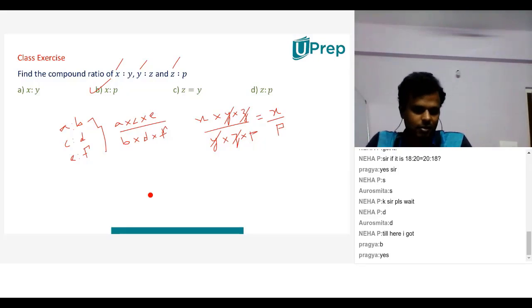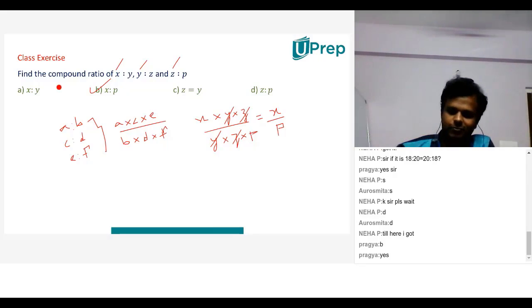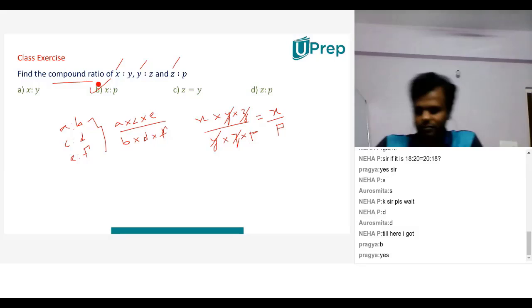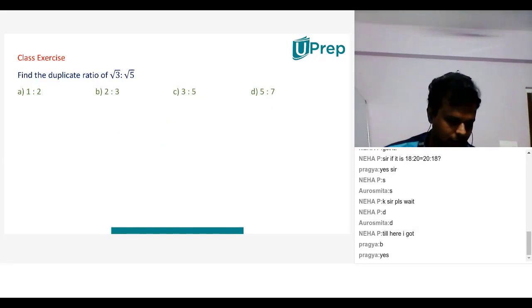Yes sir. Is it clear now? How to get the compound ratio? Yeah, it's not clear. Anjali. Oh, Fawaz is not around. Okay. Anjali, are you understanding? Anjali, how are you getting this?